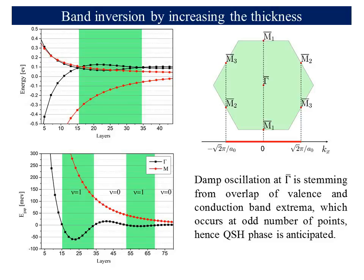To distinguish between the trivial and the quantum spin Hall phase, we calculated the topological invariant Z2 in the Brillouin zone. In the case of films with an even number of layers, the Z2 invariant is determined from the parity of occupied bands at the time-reversal invariant momenta points. The value Ni equals 0 denotes the trivial phase, while Ni equals 1 denotes the quantum spin Hall phase.